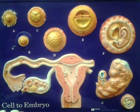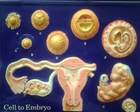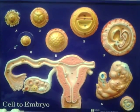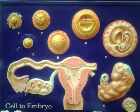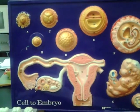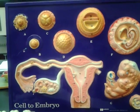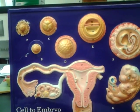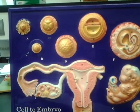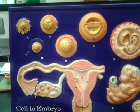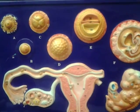This is the cell-to-embryo model. The top portion represents the developmental stages, whereas the bottom portion represents the female reproductive organs with the developmental stages.